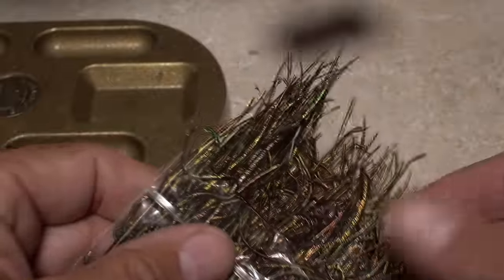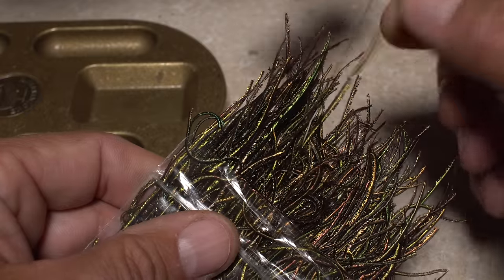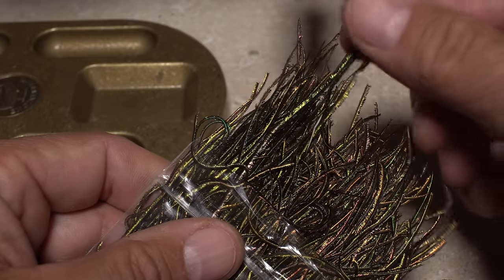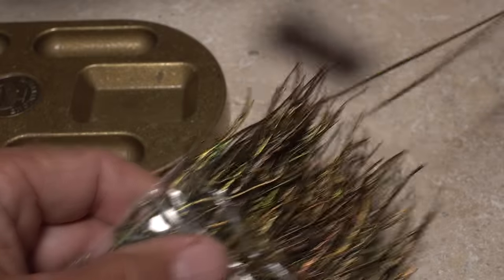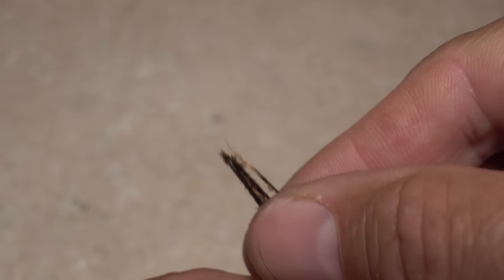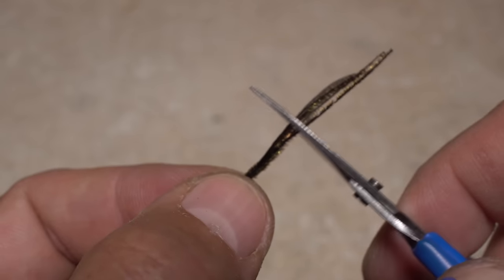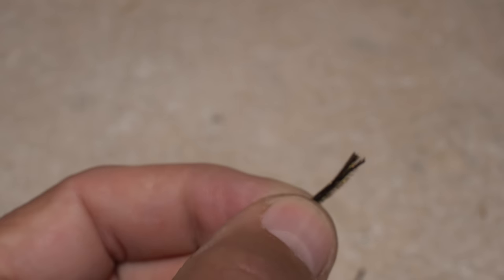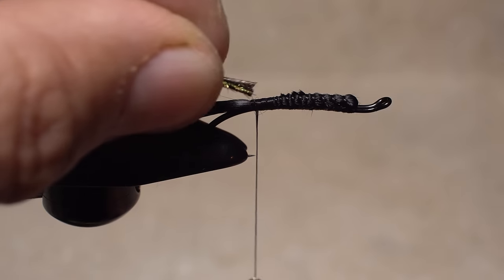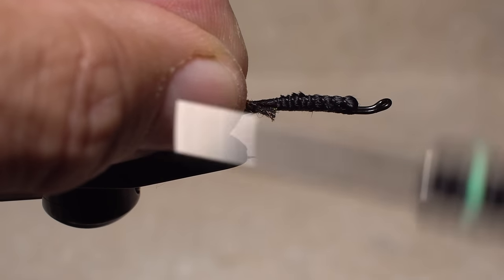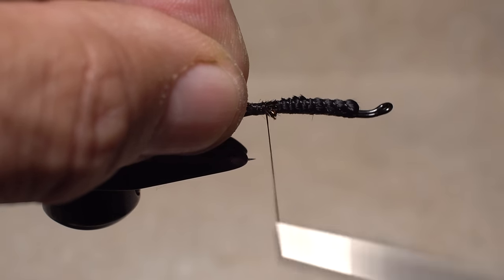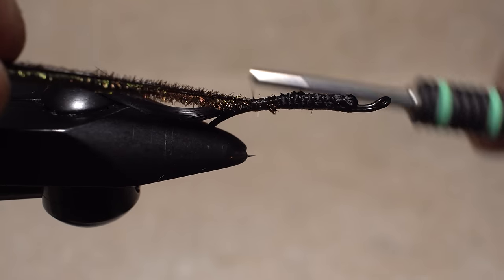The actual body of the fly is created using peacock hurl. If you can find fairly long hurls, so much the better. Pull out four or five hurls by their tips and then align the butts. You can then snip about an inch of the brittle tips off square. Lay the tips against the near side of the hook and take thread wraps to secure them. Then return your thread to the start of the bend.